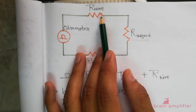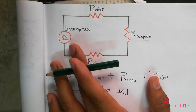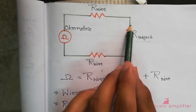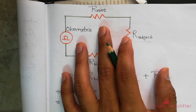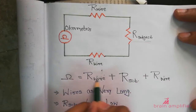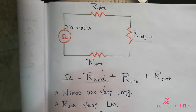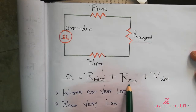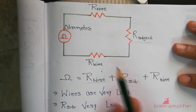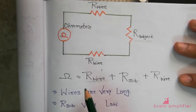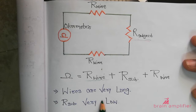Now suppose I have to take a measurement from some distance — say 40 or 50 meters. In that case, R_wire becomes significant. Since R equals rho times L divided by A, if the length is high, the resistance will be higher. So R_wire becomes an impurity — an error — in the measurement of R_subject. If R_subject is very high and R_wire is very less, this error can be neglected. But if the wire length is very high, R_wire becomes significant and the measurement becomes erroneous.